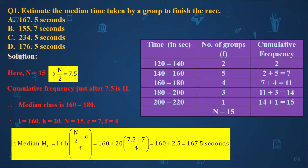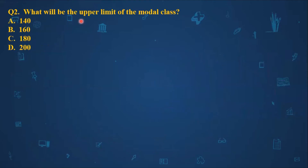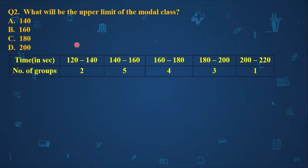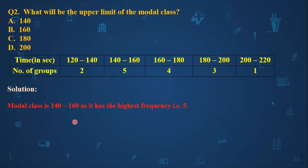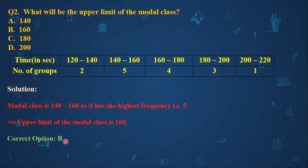The next MCQ asks for the upper limit of the modal class. To find the modal class, we look at the highest frequency in the table. The highest frequency is 5, and the corresponding class is 140 to 160. So the modal class is 140 to 160, and its upper limit is 160. The correct option is option B.